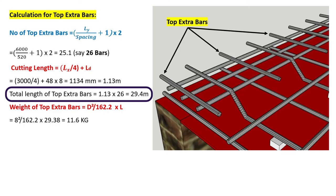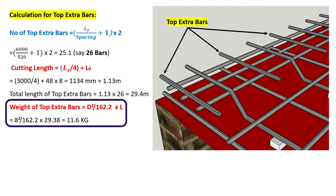The total length of top extra bars equals cutting length times number of bars: 1.13 × 26 = 29.4 meters. Weight of top extra bars is D² / 162.2 × L, where D is 8 mm and L is 29.4 meters. The total weight of top extra bars is 11.6 kg.